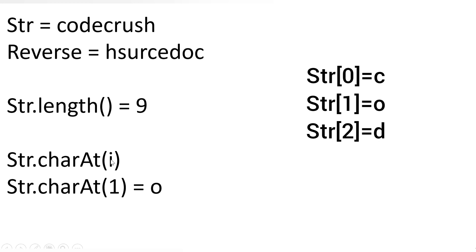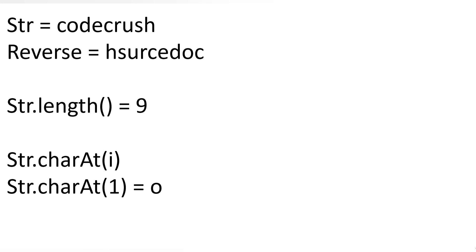The second important method you need to understand is charAt(). This method provides the character at a particular index position. If you call charAt(1), it will return 'o' because 'c' is at index zero, 'o' is at index one, 'd' is at index two, and so on. The last character will always be at index position length minus one — so if the length is nine, the last index position will be eight.